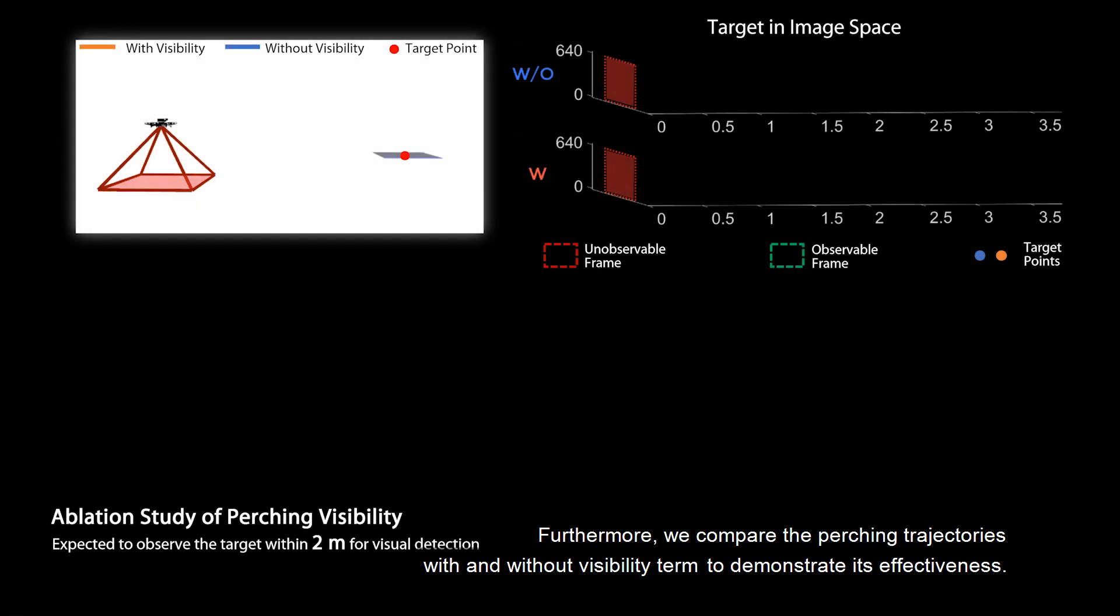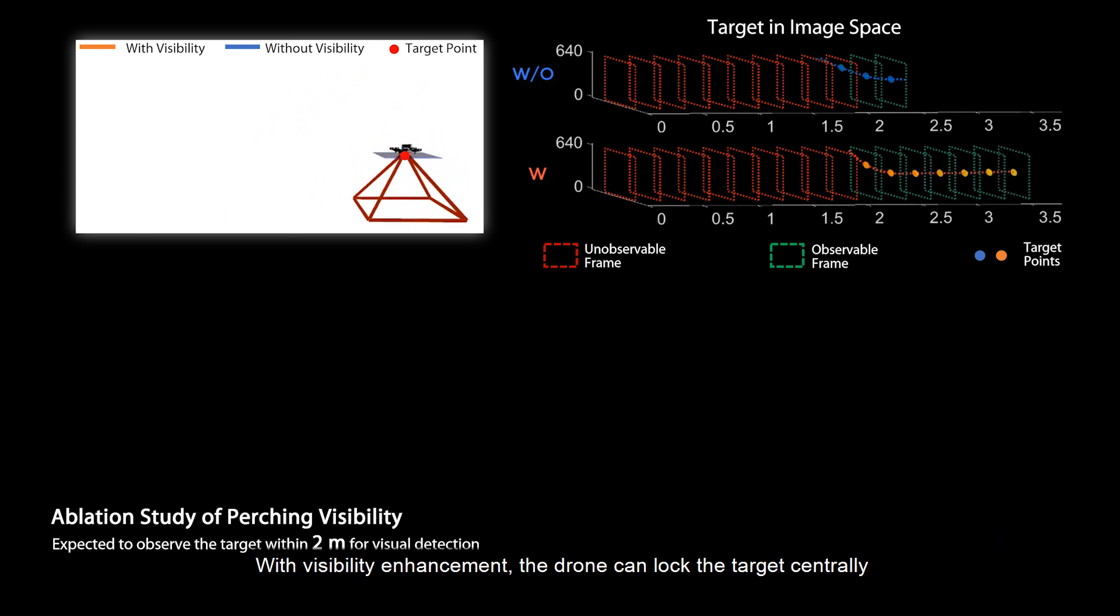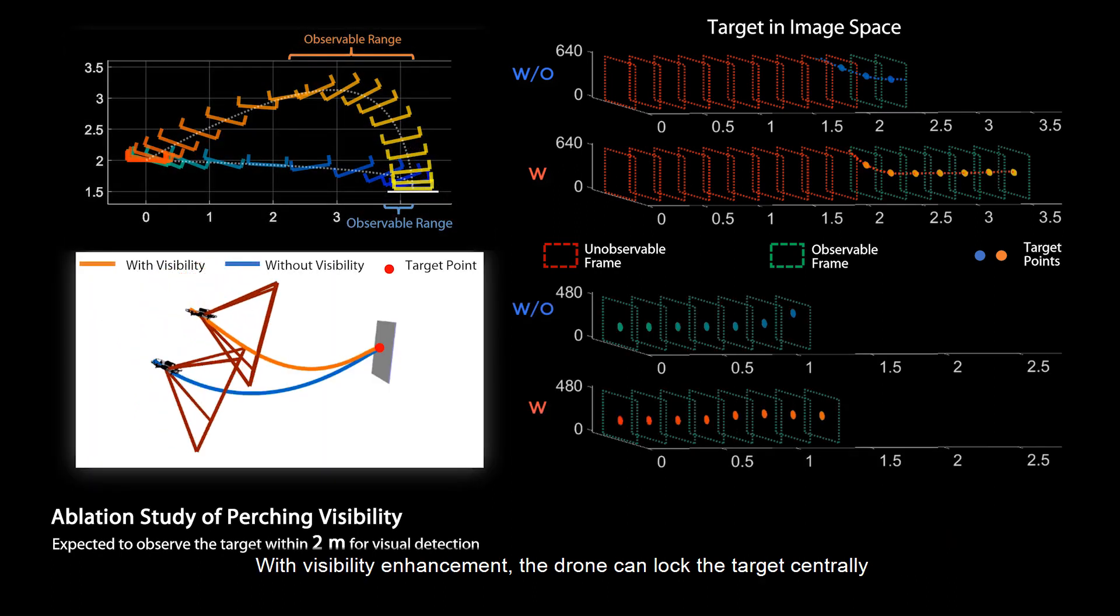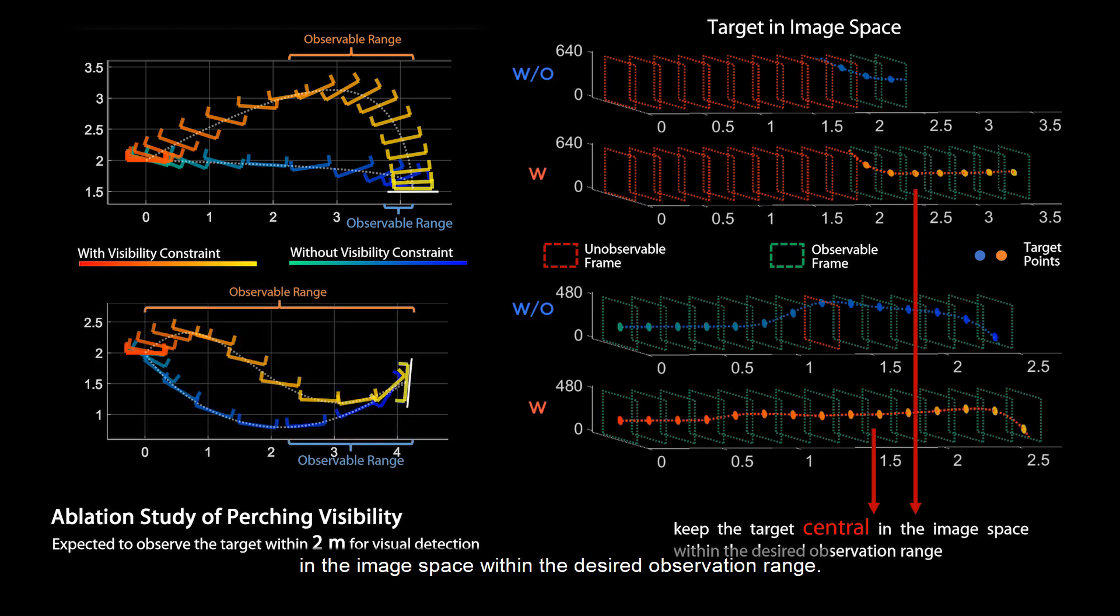Furthermore, we compare the perching trajectories with and without visibility term to demonstrate its effectiveness. With visibility enhancement, the drone can lock the target centrally in the image space within the desired observation range.